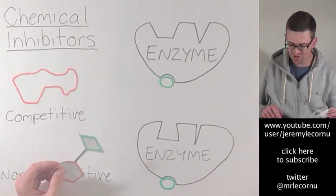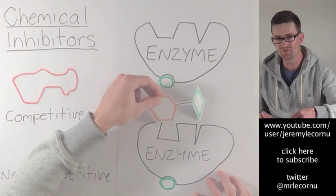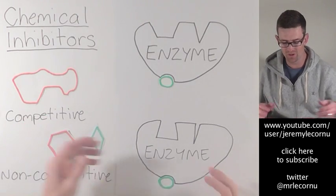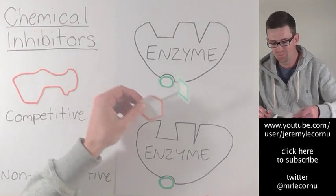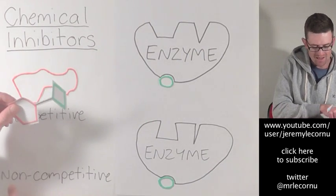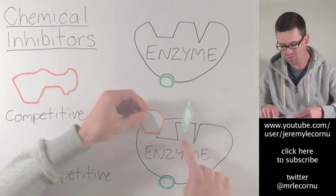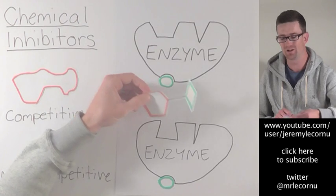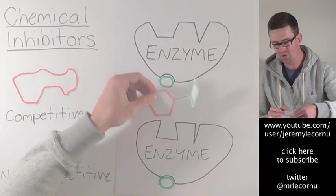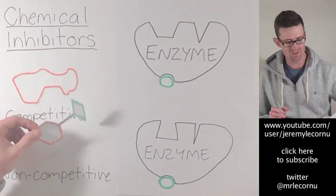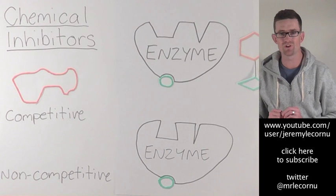Now that this enzyme has changed shape, it's warped the shape of the active site, so that's no longer going to fit with our substrate. Therefore, we've prevented the activity of the enzyme without competing for the active site — hence the name, non-competitive. This molecule is not competing with the substrate for the active site; the active site is still vacant. It's just had its shape altered, so it can no longer bind with our substrate. That's how the process of non-competitive inhibition works: binding at an alternative site on the enzyme, and preventing the binding of the substrate with the active site.